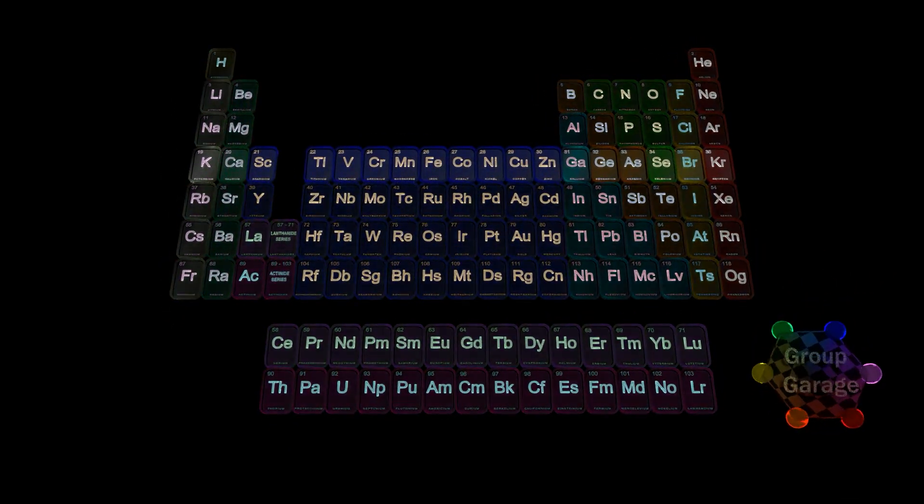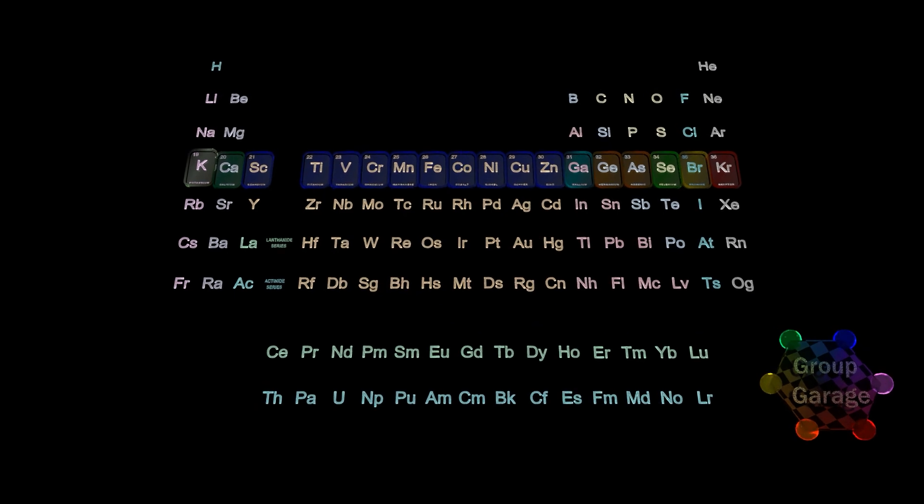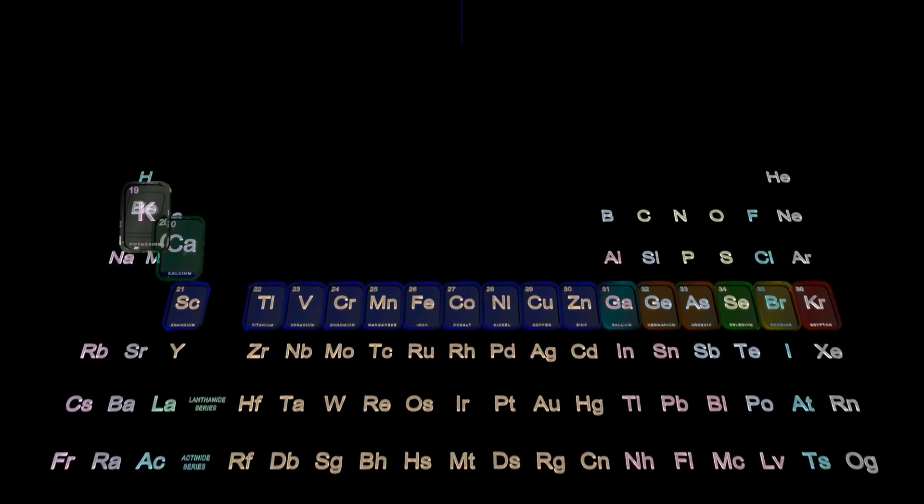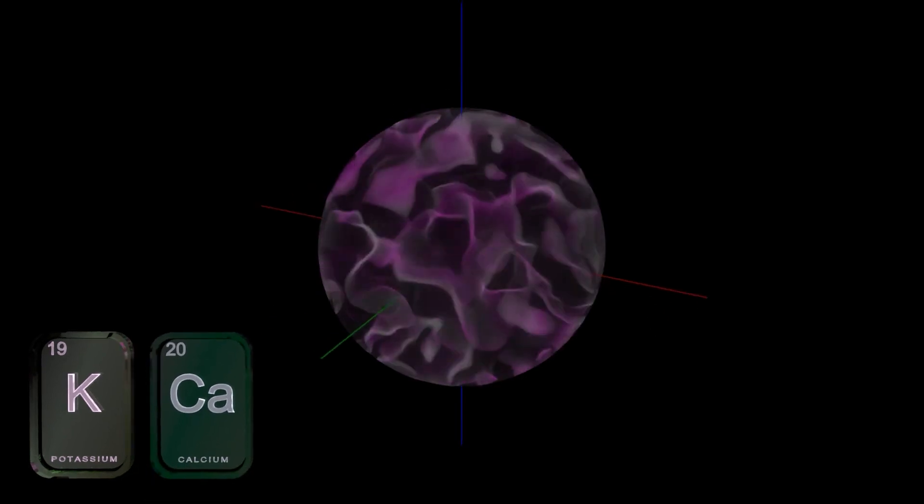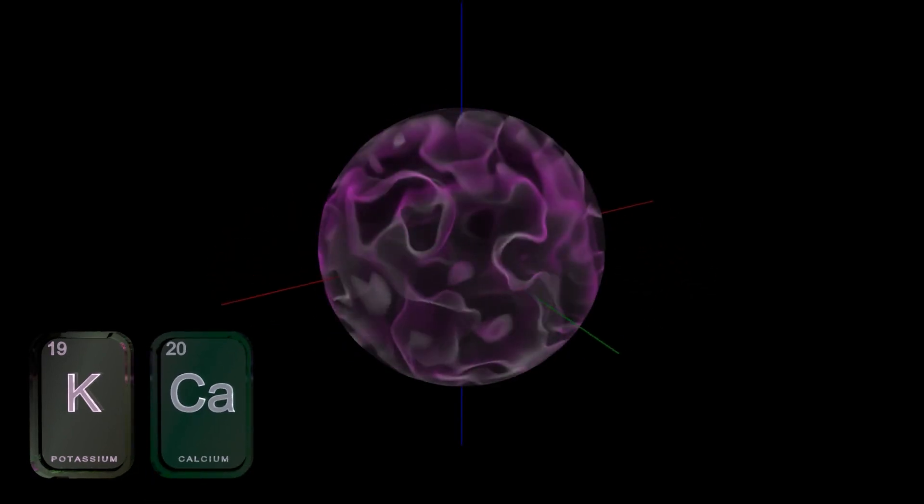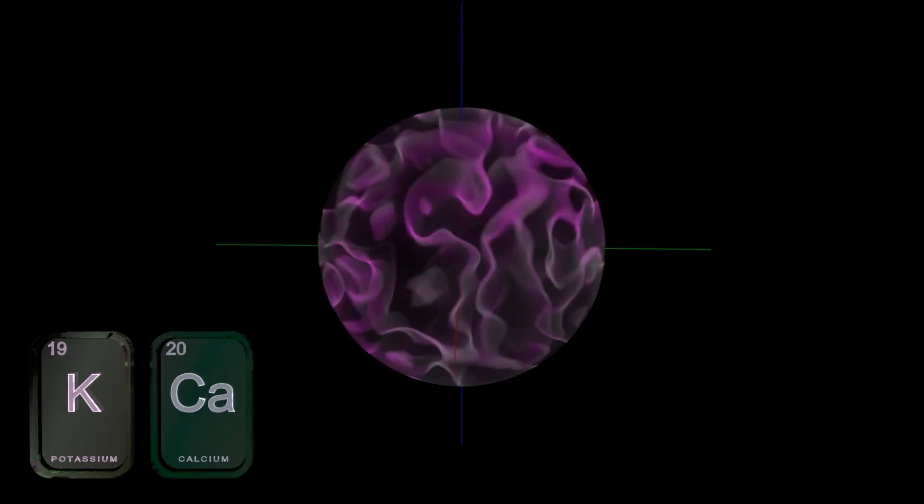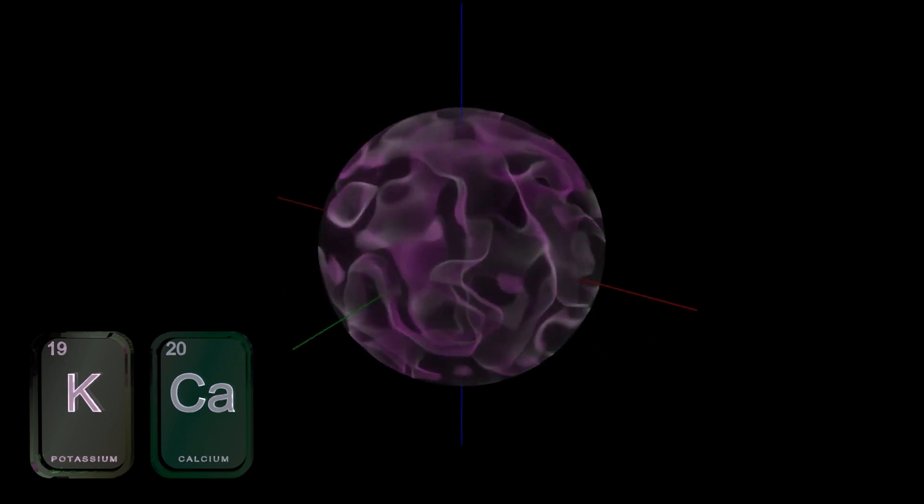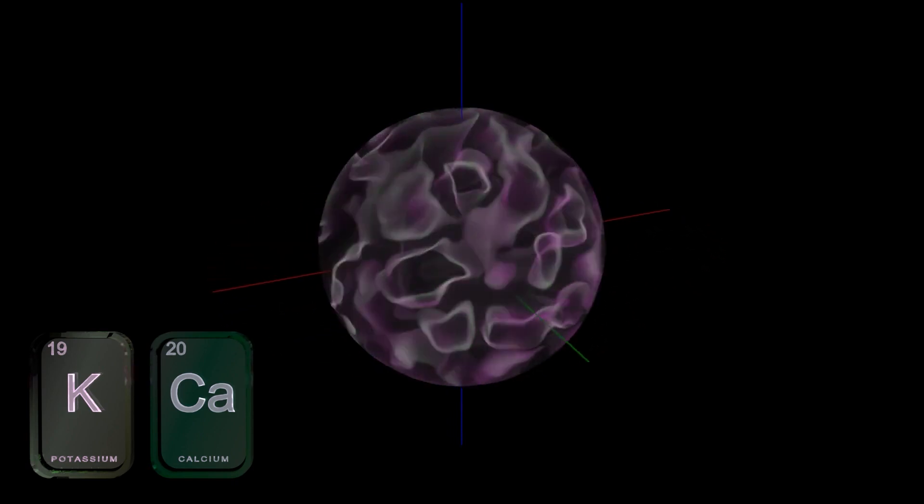Following along, as we build up the electron cloud, potassium and calcium are in the fourth row. The principal energy level, n equals 4, and the first two groups, the angular momentum, L, equals 0. And so we have an S, or spherical-shaped orbital, 4s will just be larger than 3s.